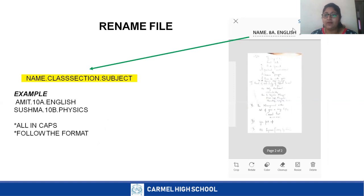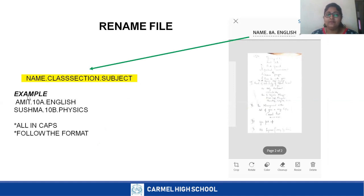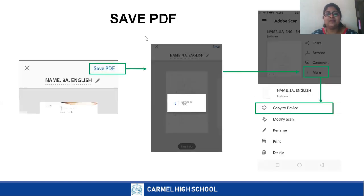Very importantly, you need to give a name to your file. Click the pen icon — that is the Edit button — and change the name of your file document. Follow this naming format: Name dot Class and Section dot Subject. For example: AMIT.10B.ENGLISH — write in capital letters. Follow this format every time an assignment is given, otherwise it becomes very difficult to identify which child's assignment it is.